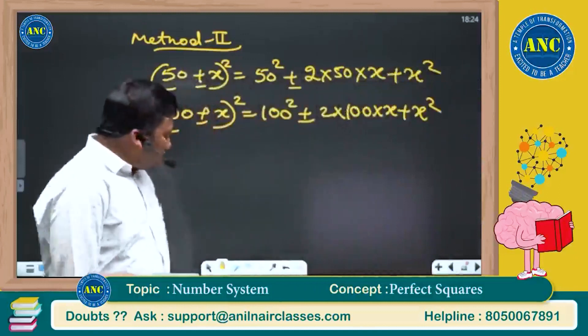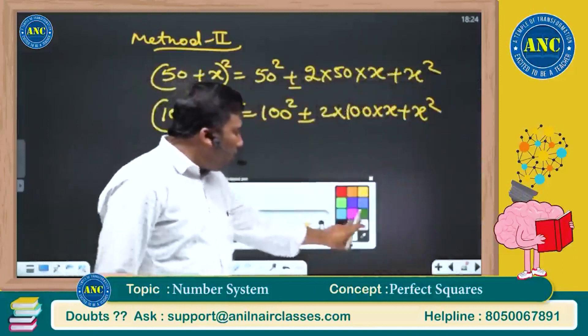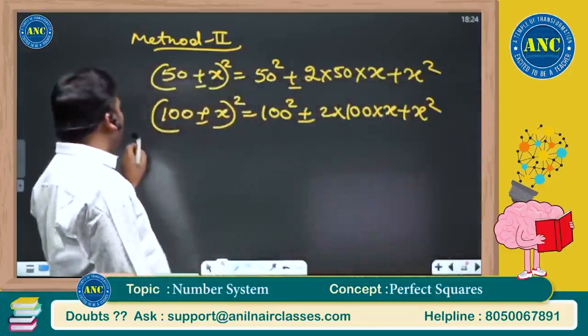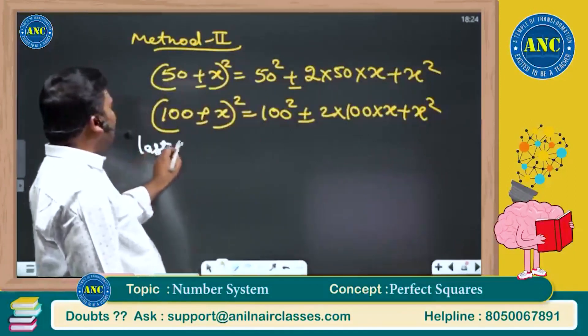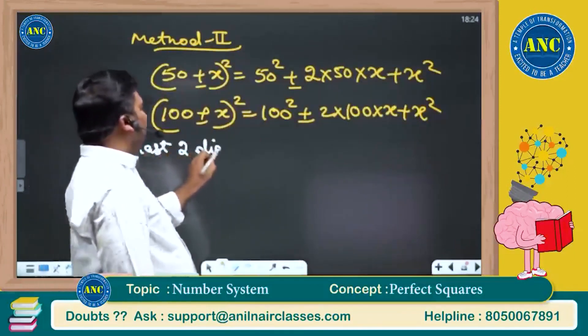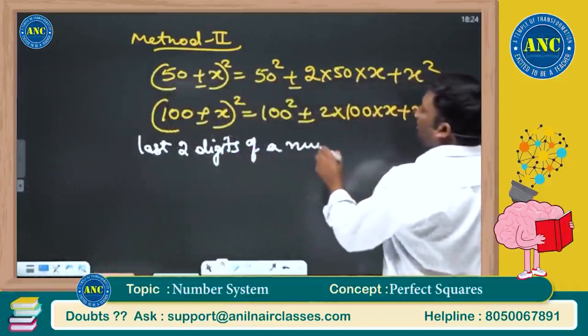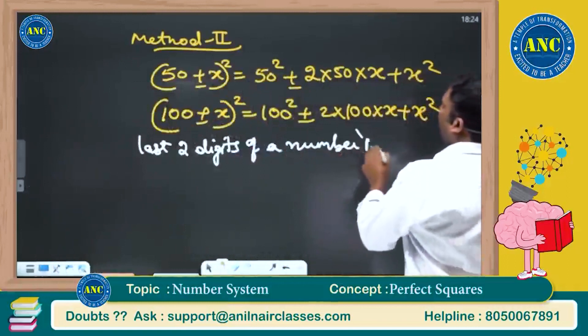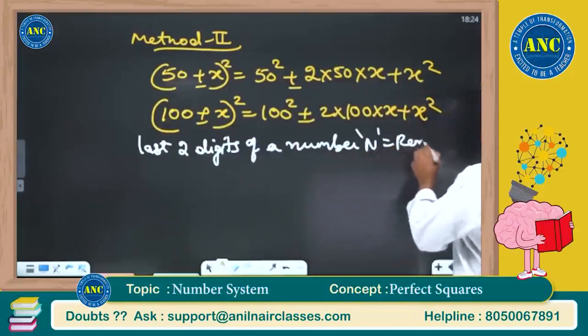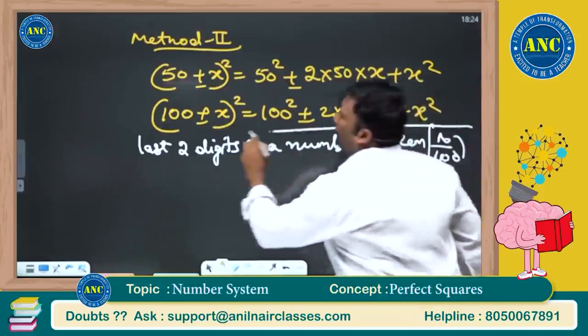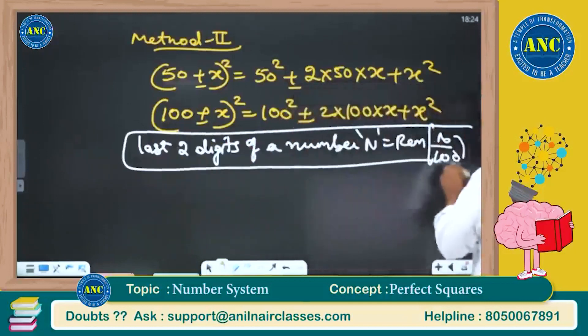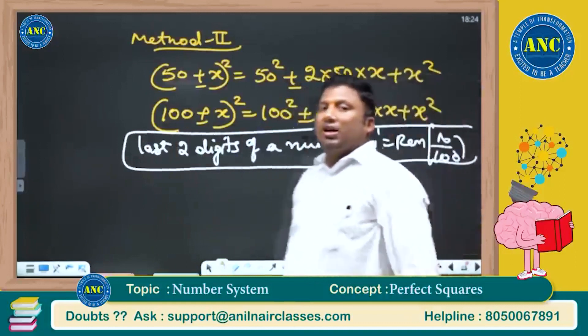Now what is that we discussed at the first point? The first point that we discussed is last two digits of a number. It is nothing but the remainder when you divide a number by 100. Whatever is left over, that is nothing but the remainder.